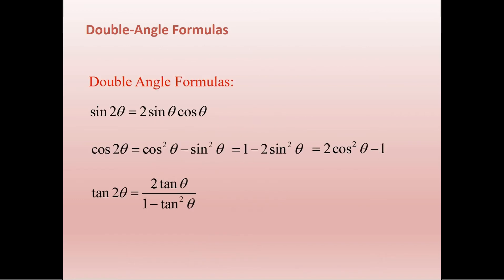Here they are written out: sine 2 theta is 2 sine cosine. You'll use this one quite frequently, so it tends to get stuck in memory, as does cosine 2 theta — cosine squared minus sine squared. We're so used to sine squared plus cosine squared with our Pythagorean identities that when we see that minus sign, now we know we can use cosine 2 theta. And then, of course, tan 2 theta.